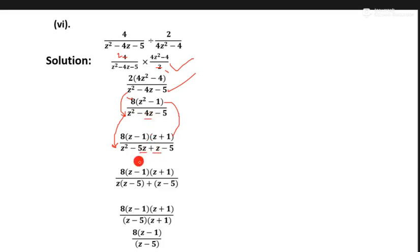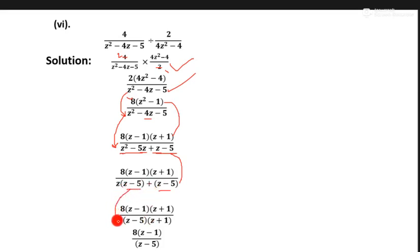We take common z from both these parts and write z minus 5. Now z minus 5 and z minus 5 same, so we take z minus 5 common from both parts. In the next part z minus 5 common, remaining term is z plus 1. When we take common z minus 5, remaining term is 1. Same common terms cancel — z plus 1 and z plus 1 cancel — so remaining terms are z minus 1 upon z plus 1.